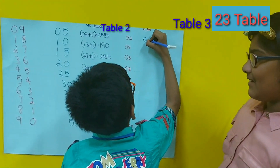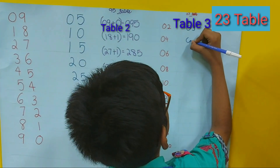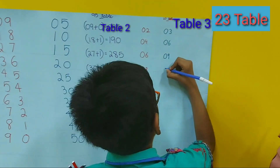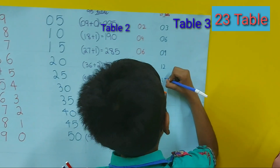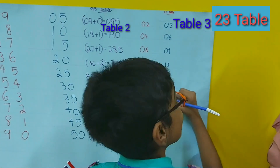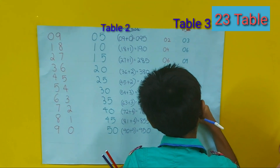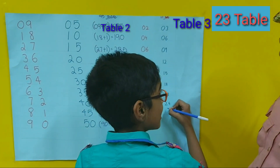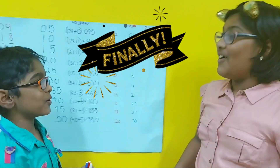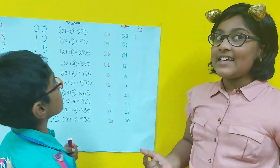Now the 3s: 3 ones are 03, 3 twos are 06, 3 threes are 09, 3 fours are 12, 3 fives are 15, 3 sixes are 18, 3 sevens are 21, 3 eights are 24, 3 nines are 27, 3 tens are 30. Yoo-hoo! We completed both tables. So now let's write the 23 table.